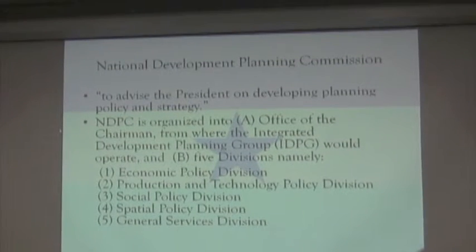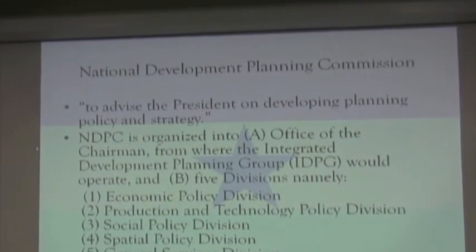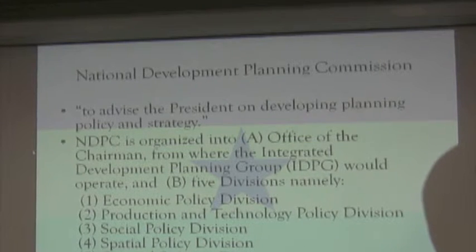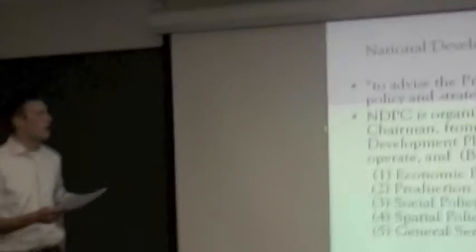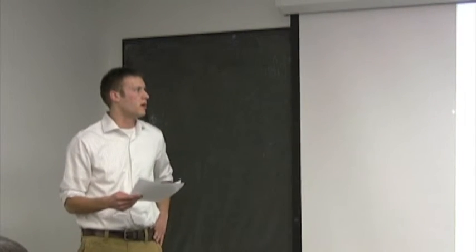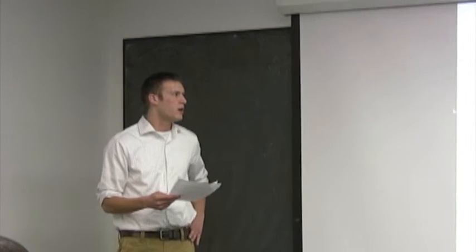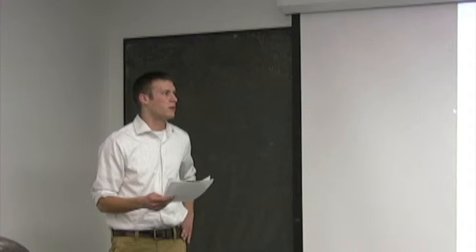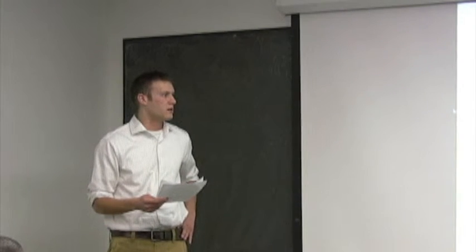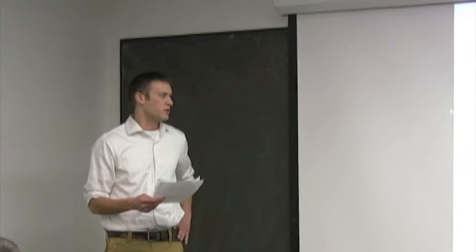The National Development Planning Commission's main goal is to form comprehensive national development planning strategies and to review plans as political and economic conditions change. Their main function is to advise the president on development planning policy and strategy. It is organized into two offices: the office of the chairman, which advises the second office, which is split into five divisions — the economic policy division, production and technology policy division, social policy division, spatial policy division, and general service division.